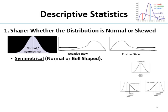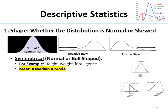Symmetrical distributions are also called normal or bell-shaped. A lot of things about people are normally distributed — height, weight, and intelligence are normally distributed in a big enough population. It turns out that the mean, median, and mode are all the same in a normal distribution. Look at that little plot on the right — the mean, median, and mode are all the same in a symmetric distribution.